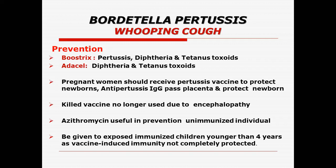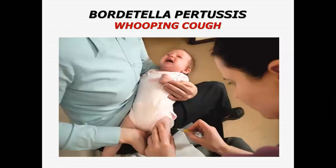IgG can pass the placenta and protect the newborn. The killed whole-cell vaccine is no longer used because it can cause encephalopathy. Azithromycin is useful in prevention particularly in unimmunized individuals but cannot be used as a full treatment. It should be given to exposed individuals, particularly children younger than 4 years, because vaccine-induced immunity does not provide complete protection, so antimicrobial supportive therapy is also needed.